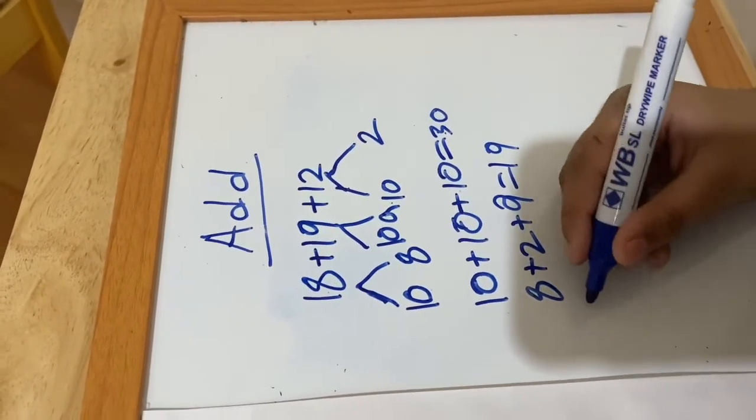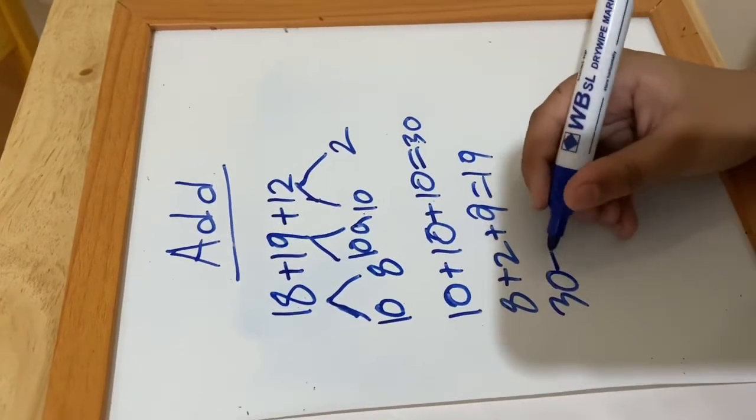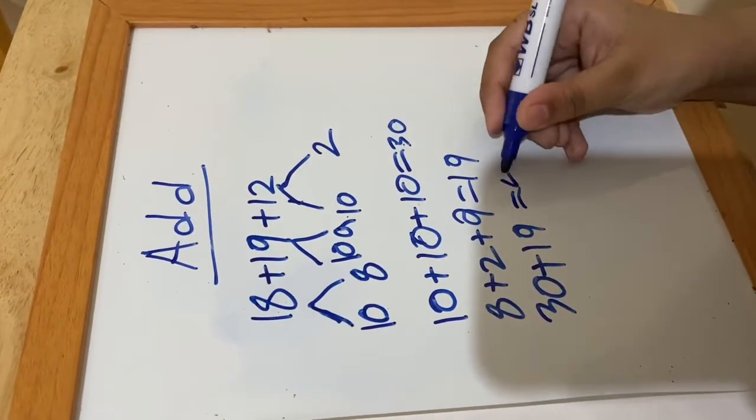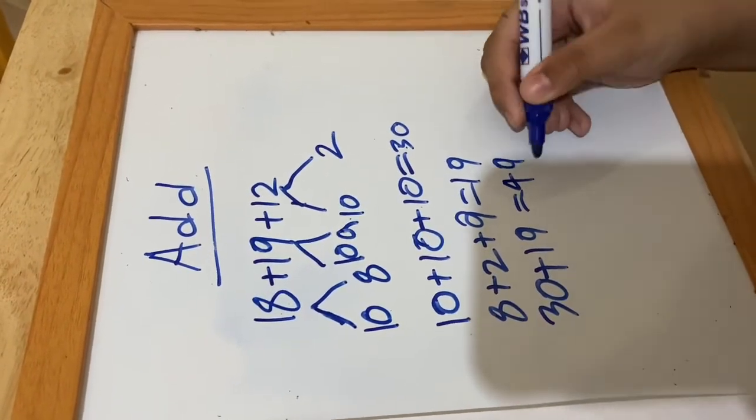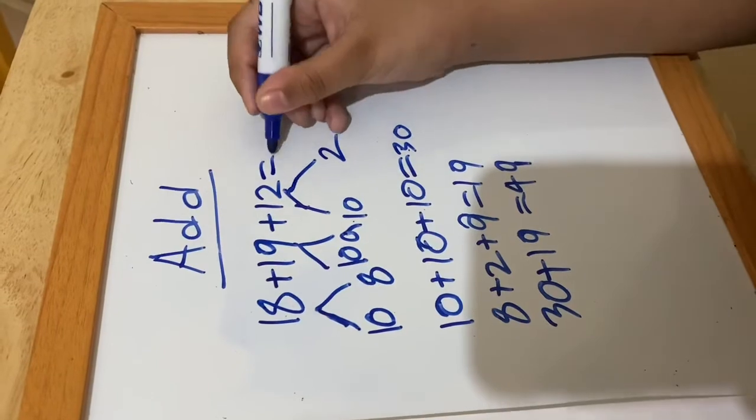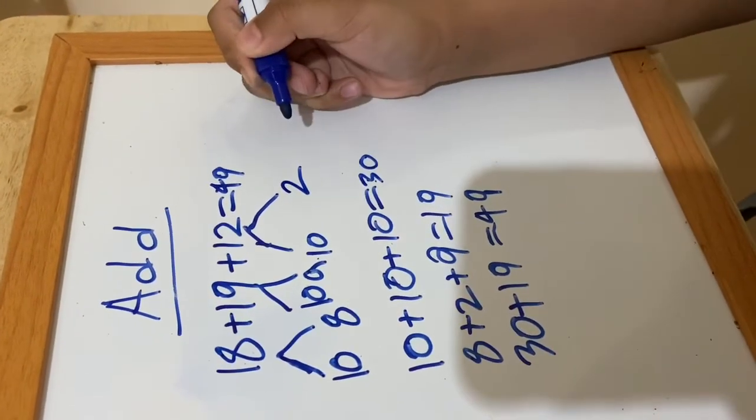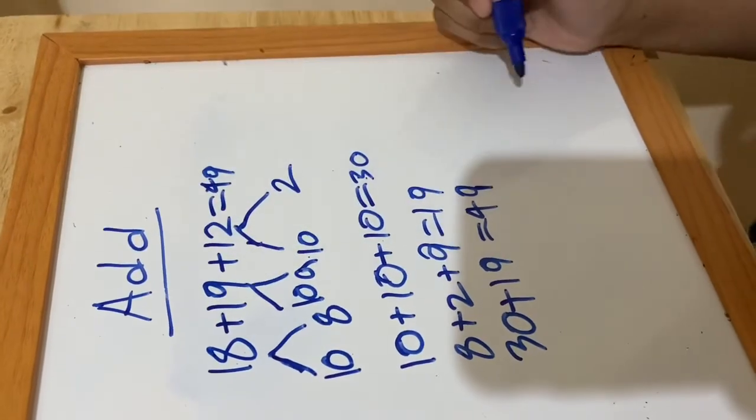30 plus 19 equals 49. And that is how you work out a number sentence with three numbers. And that's it for today, goodbye! Bye!